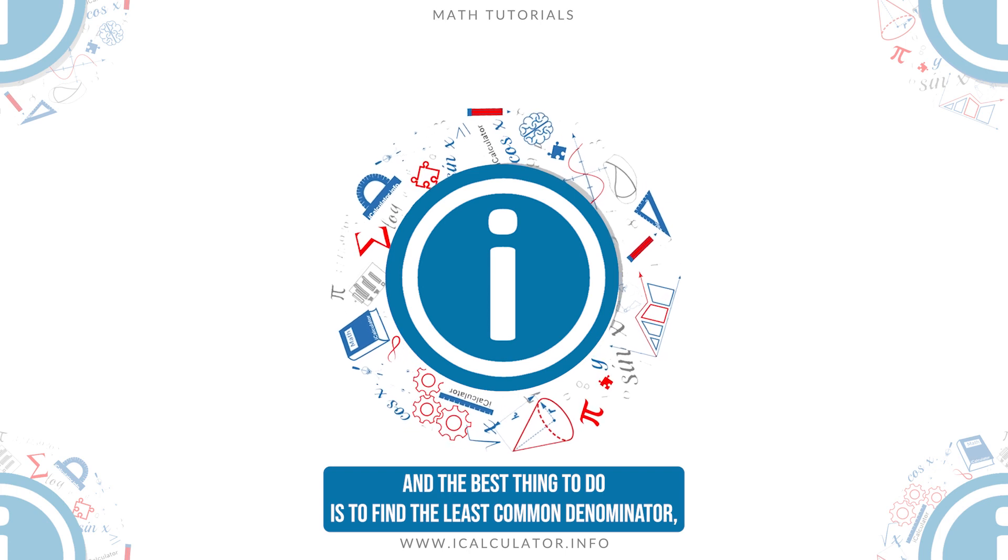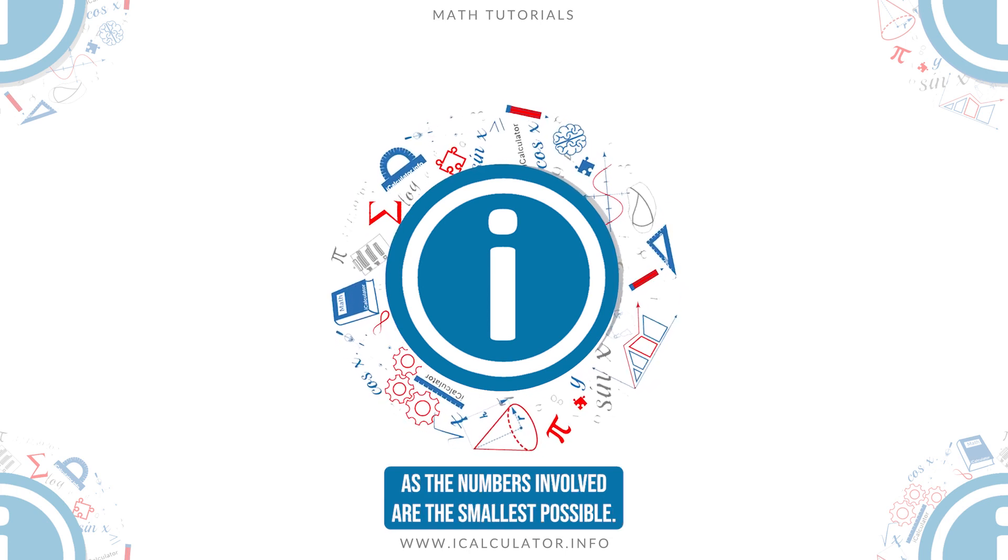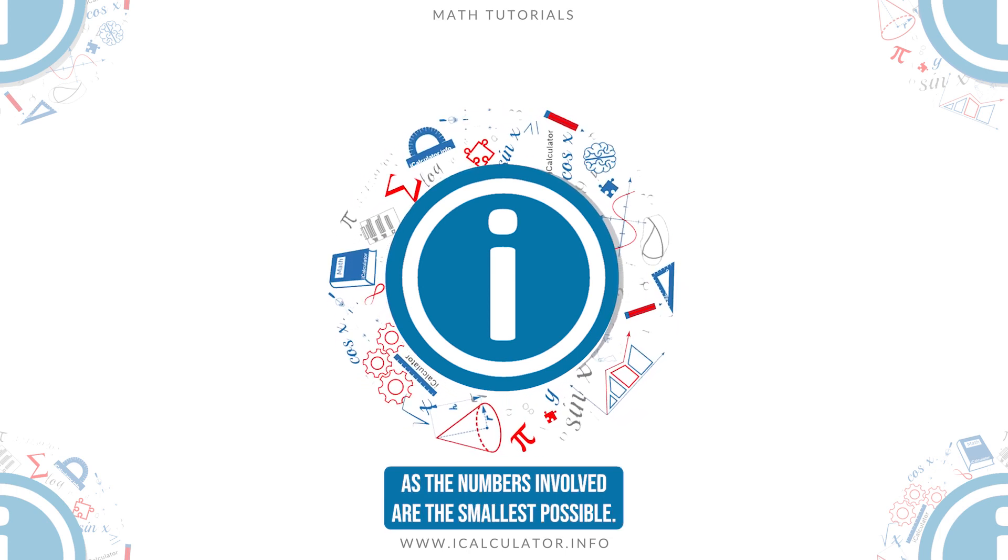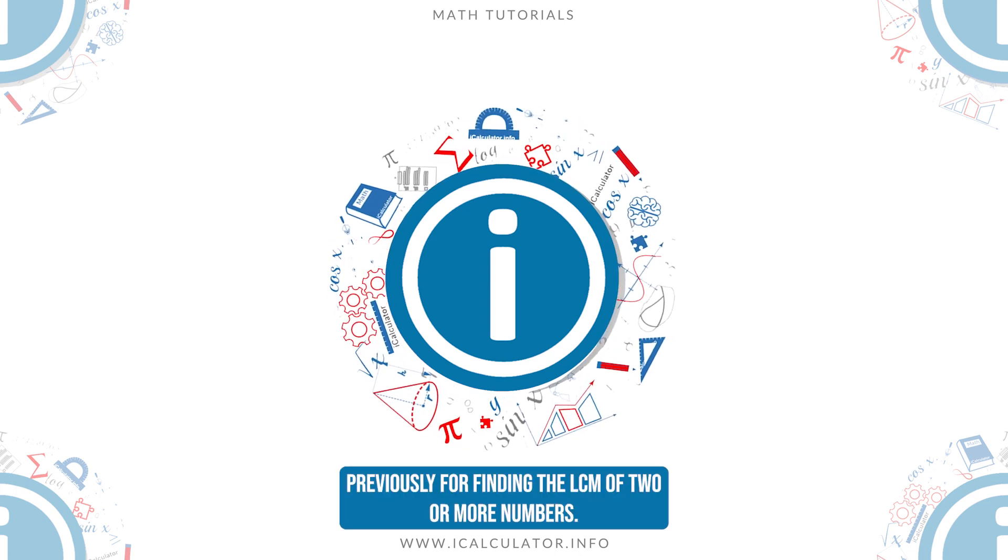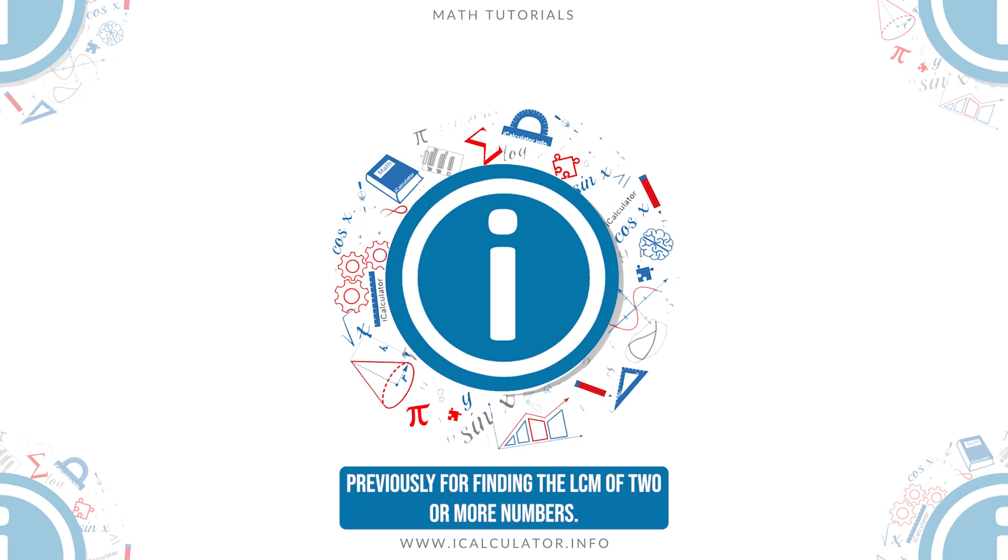and the best thing to do is to find the least common denominator, as the numbers involved are the smallest possible. For this, we can use the method described previously for finding the LCM of two or more numbers.